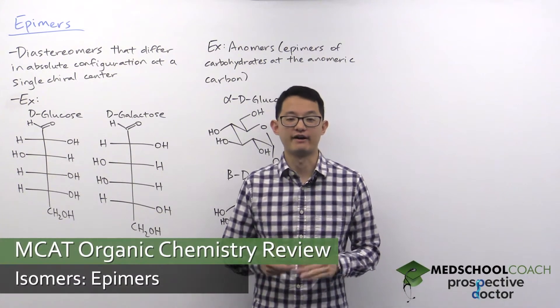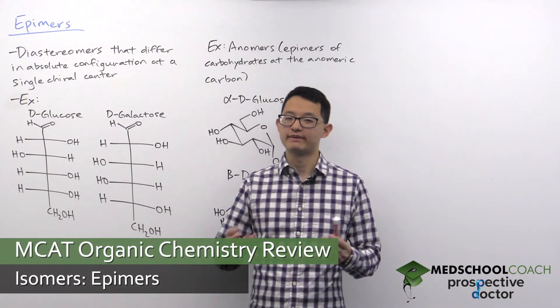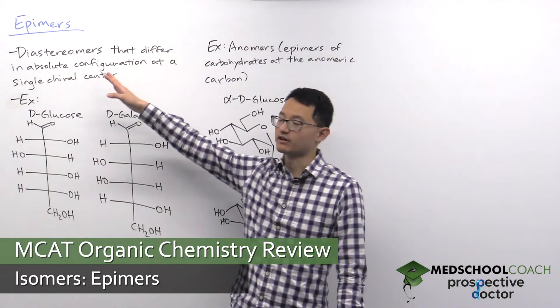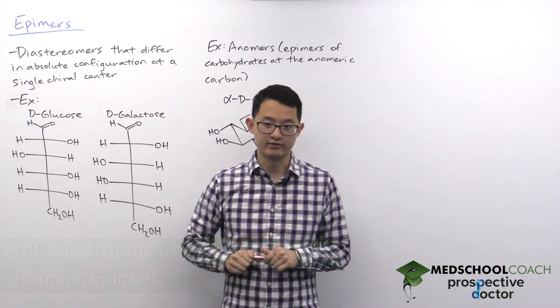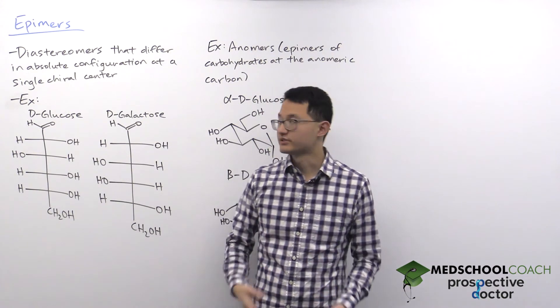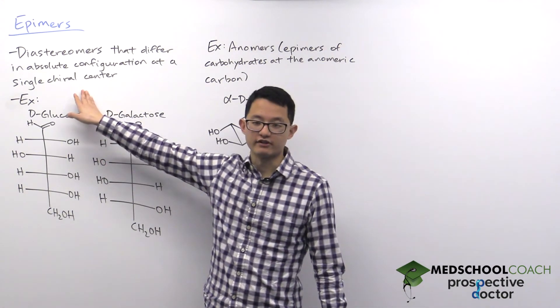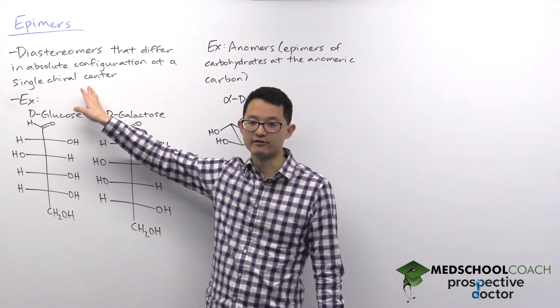In this video we're going to talk about epimers. As we talked about in the last video, epimers are a type of diastereomers. Specifically, they are diastereomers that differ in absolute configuration at a single chiral center.